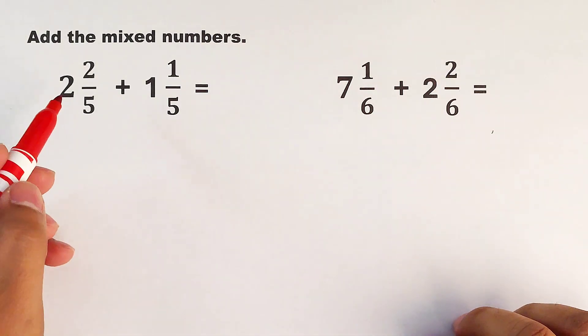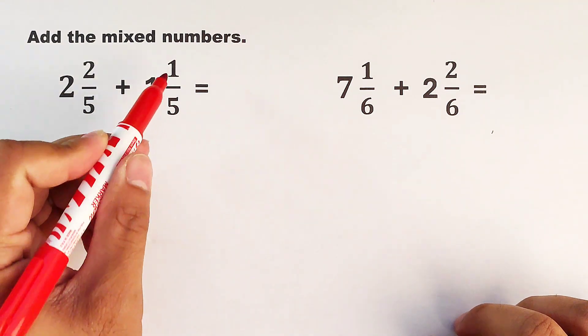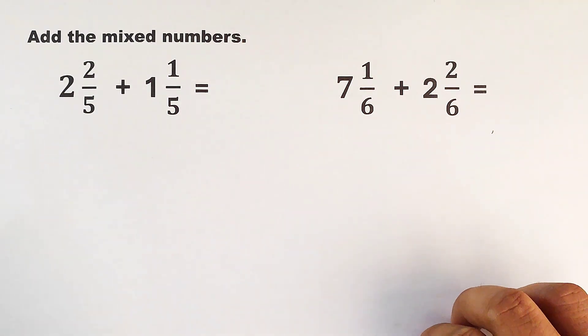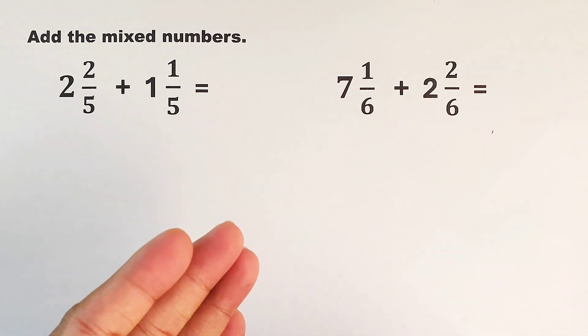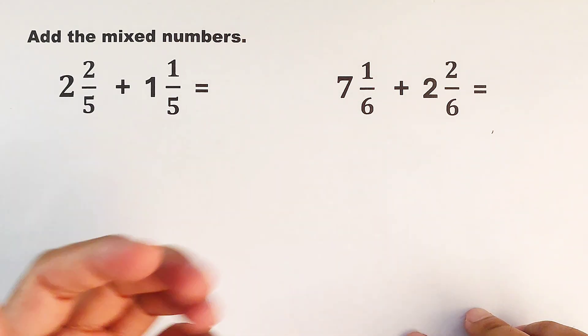We have here 2 and 2 over 5 plus 1 and 1 fifth. So how do we add this kind of mixed numbers? Basically, we can separate, we can dissect, or we can add the whole numbers and the fractions separately. And it goes like this.